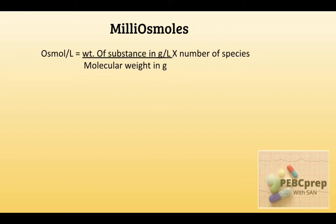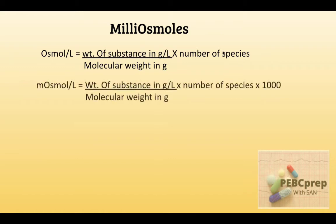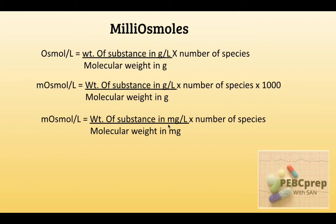Now let's see the formula. Milliosmoles per litre equals the weight of substance in grams per litre, divided by molecular weight of that substance in grams, multiplied by the number of species. If we want to find milliosmoles, we multiply the whole equation by 1000. Remember that this applies when the value is in grams. If the value is already in milligrams, we do not multiply by 1000, because that 1000 is converting osmoles into milliosmoles.